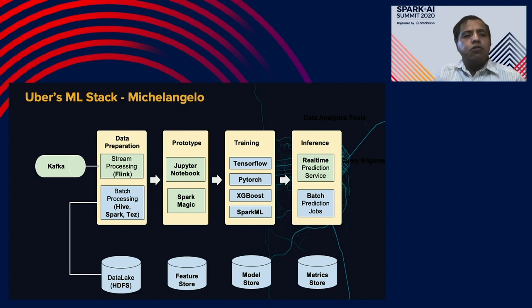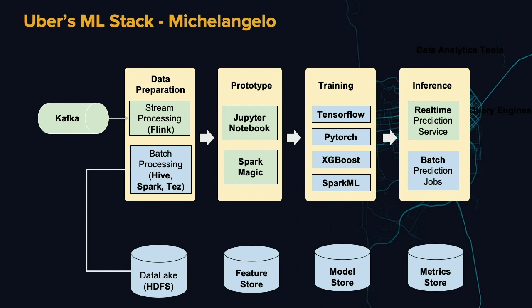Let's talk about Uber's ML stack. There are many stages for machine learning at Uber. For data preparation, we use stream processing via Flink, powered through Kafka. For batch processing we use Hive, Spark, and Hive Thrift, pulling from HDFS. Once data preparation is done, we do prototyping using Jupyter Notebooks and SparkMagic. For training, we use TensorFlow, PyTorch, XGBoost, and Spark ML. For real-time inference and batch prediction, we use a real-time prediction service. We have a feature store, model store, and metric store — all part of the Michelangelo ML platform.